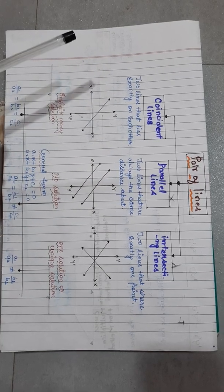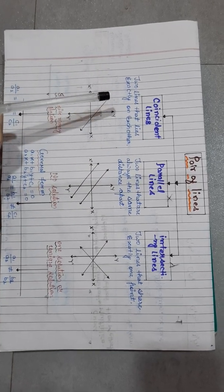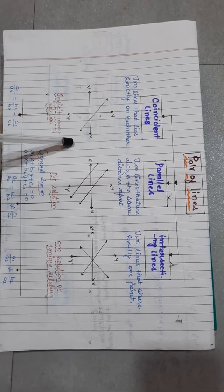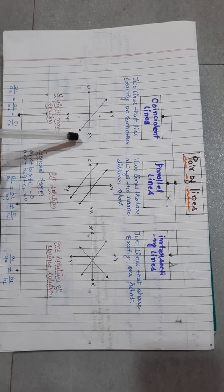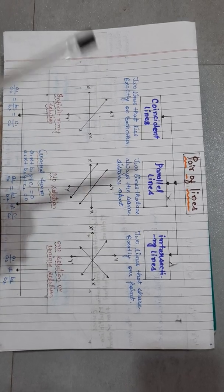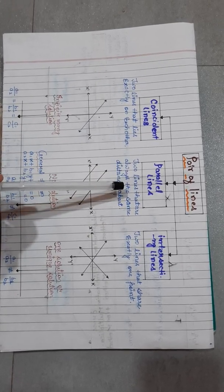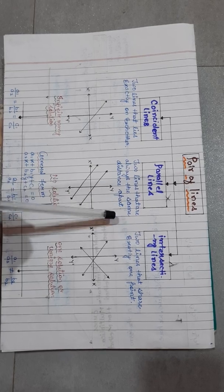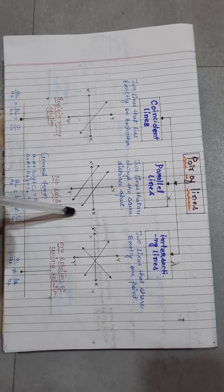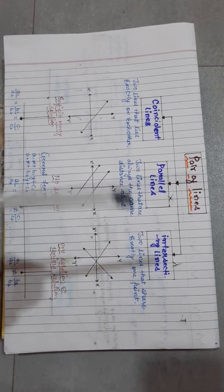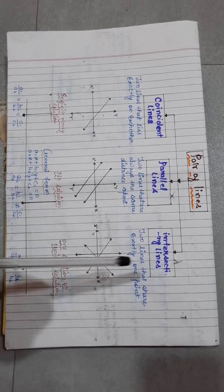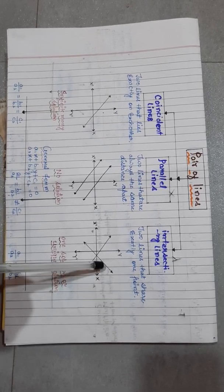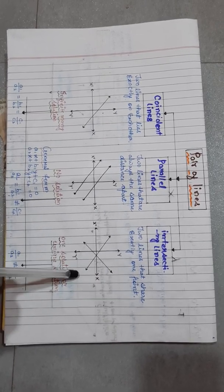In coincident lines, two lines lie exactly on each other. In parallel lines, two lines are always the same distance apart. In intersecting lines, two lines share exactly one point.